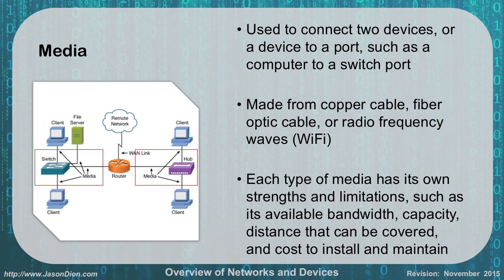Next we have media — what is used to connect two devices together. When you hook a computer to a hub, switch, or router, you have to cable it together somehow, and that cabling is what we refer to as media. That can be copper cable like RJ45 Cat5 or Cat6, fiber optic cable with LC or SC type connectors, or radio frequency like Wi-Fi or Bluetooth — even air is considered media. Each type of media has its own strengths and limitations, and we'll talk about bandwidth, capacity, distance, and cost in a later module.